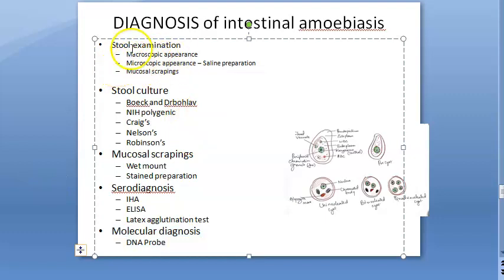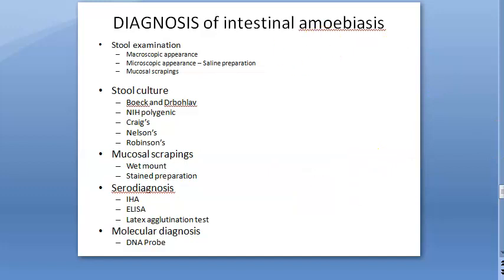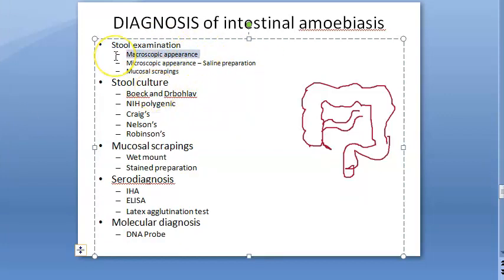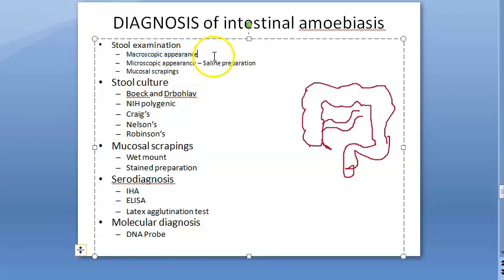In stool examination for intestinal amoebiasis, we are talking only about the intestine here. On macroscopic appearance, you collect the stool into a container and you will see it will not stick. The stool is foul smelling, semi-liquid, and there will be a lot of stool. It will be brownish-black in color, intermingled with blood and mucus, and it does not adhere to the container.